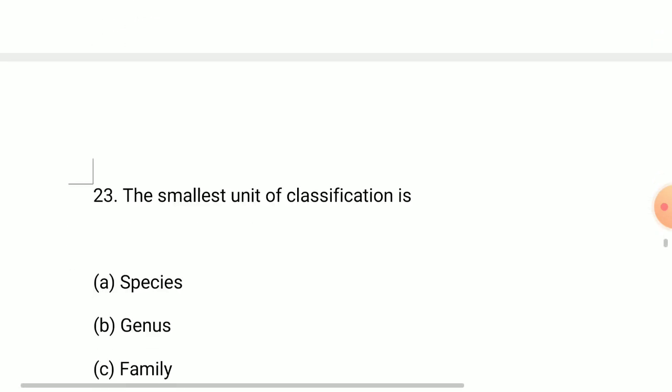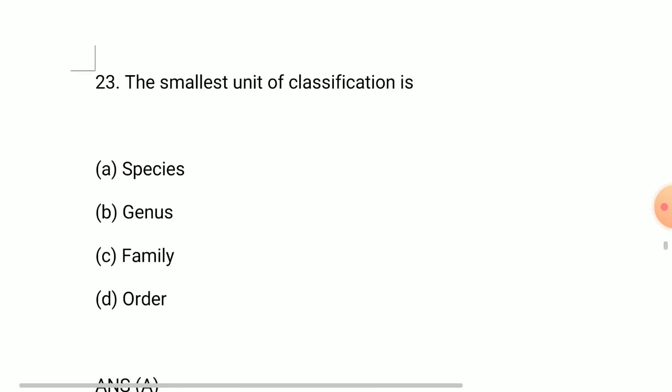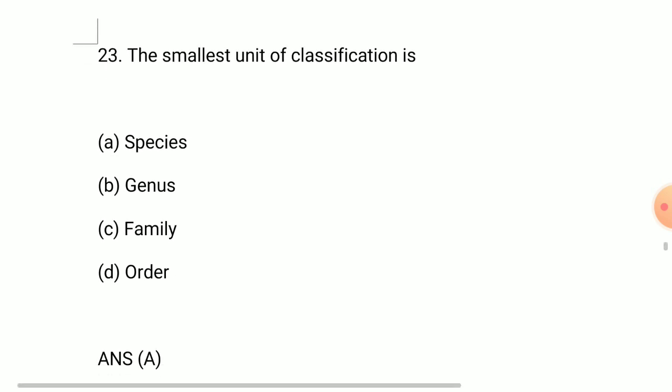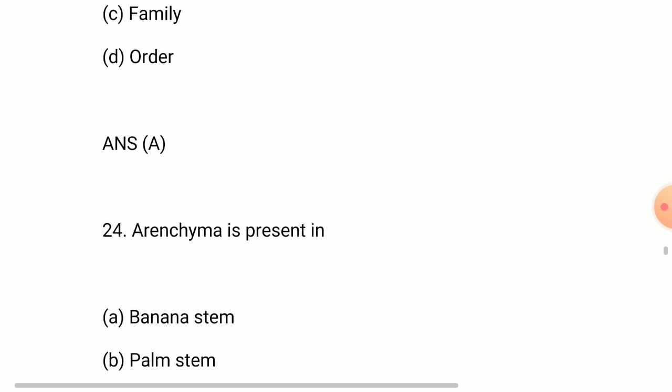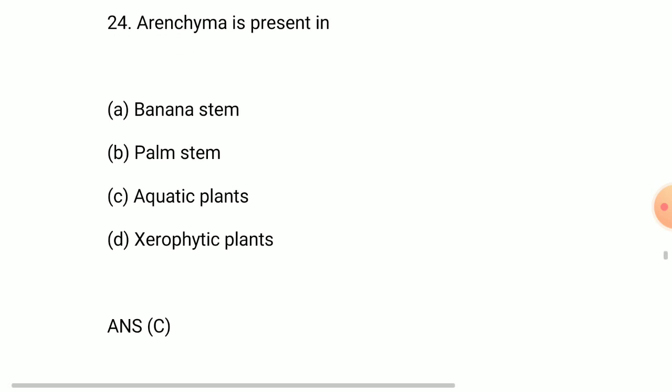Question 23: the smallest unit of classification is answer is species. Question number 24: aerenchyma is present in answer is aquatic plants.